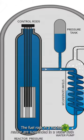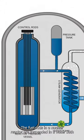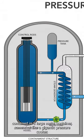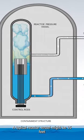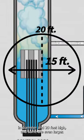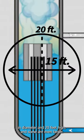The fuel rods in a nuclear reactor are suspended in a water bath contained in a large metal container, somewhat like a gigantic pressure cooker. A typical reactor vessel might be 15 feet in diameter and 20 feet high, and some are even larger.